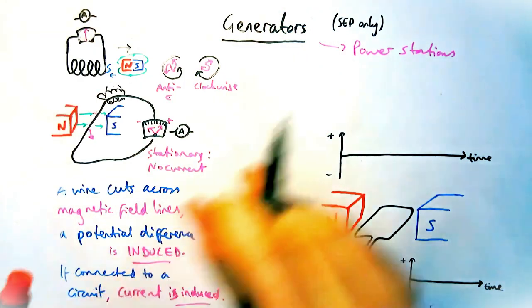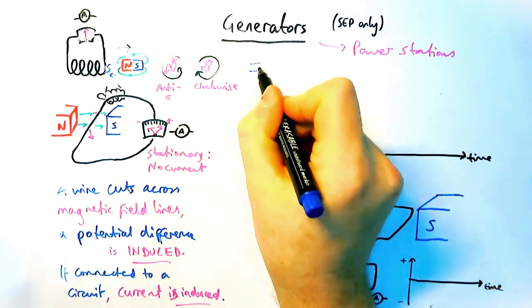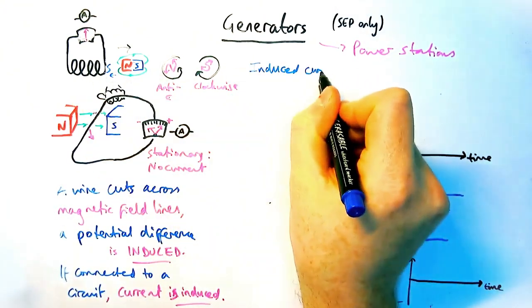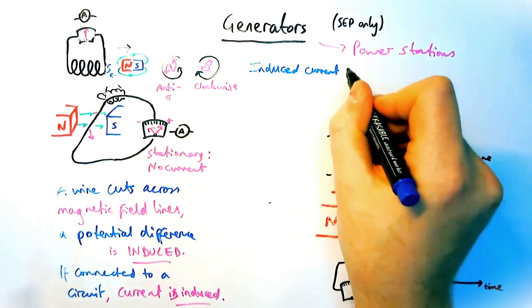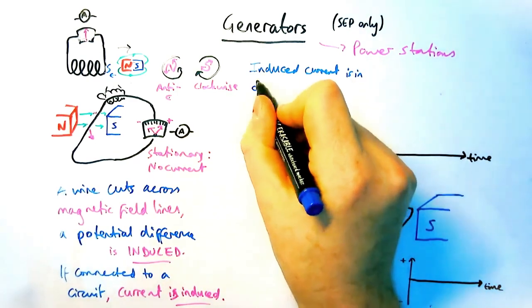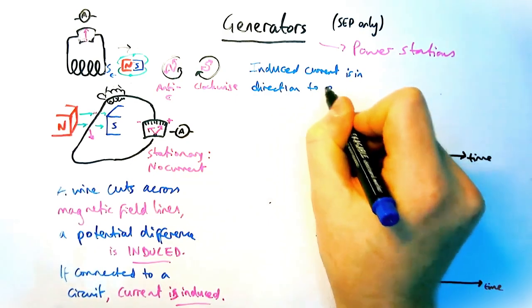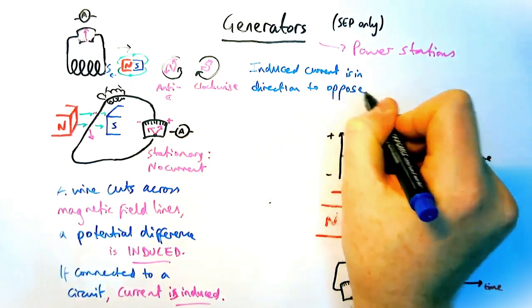Now, your questions to do with this are often to do with why generators are easier to turn or harder to turn, or why there's a resistance to motion, which is an example. What you'd have to say in words is that the induced current is in the direction to oppose whatever change has caused it.